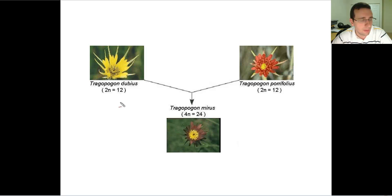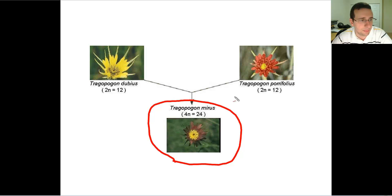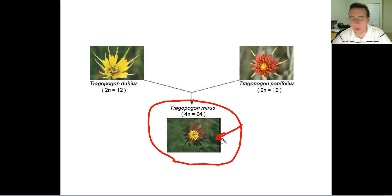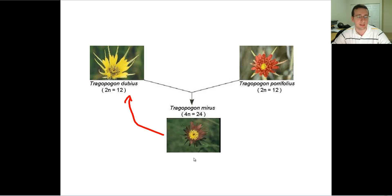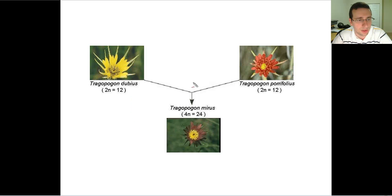This has actually been observed in nature. These two types of flowers are completely different and shouldn't be able to make offspring with each other, but they do. The hybrid plant cannot cross back with the parent plants — confirming they are different species — but it can cross with itself, meaning it is a viable new species. This has been observed in nature over the last few hundred years.